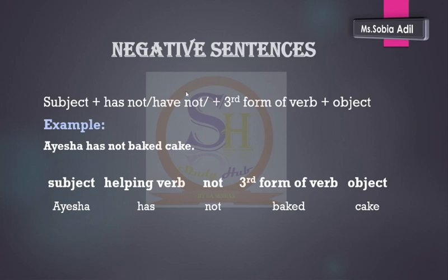Moving towards the negative sentences — these are sentences in which we negate something. We write first the subject, then the helping verb 'has' or 'have', then 'not', then the third form of verb, and after that the object. The example is: 'Aisha has not baked cake.' 'Aisha' is the subject, 'has' is the helping verb, 'not' comes after the helping verb, 'baked' is the third form of verb, and 'cake' is the object.